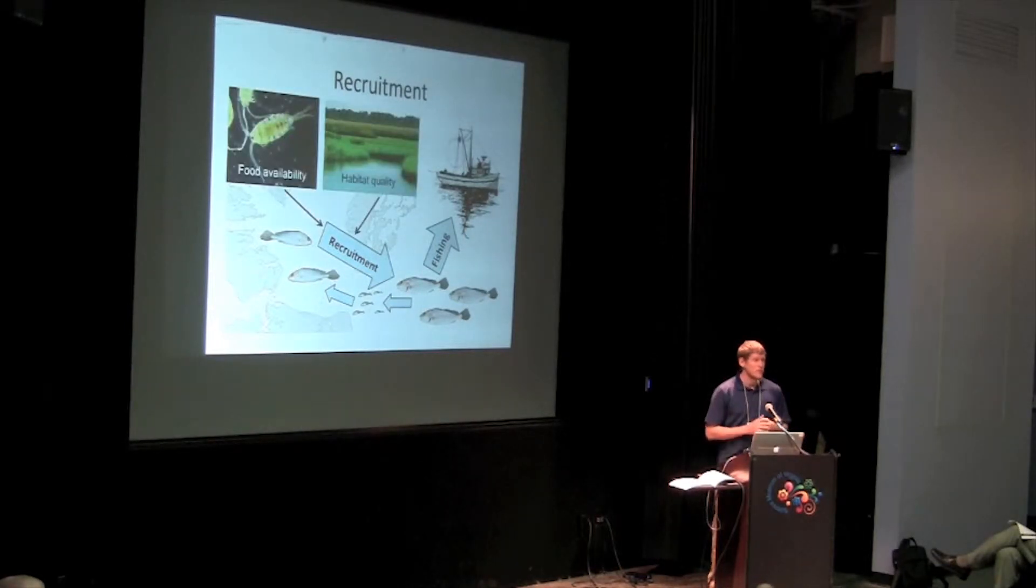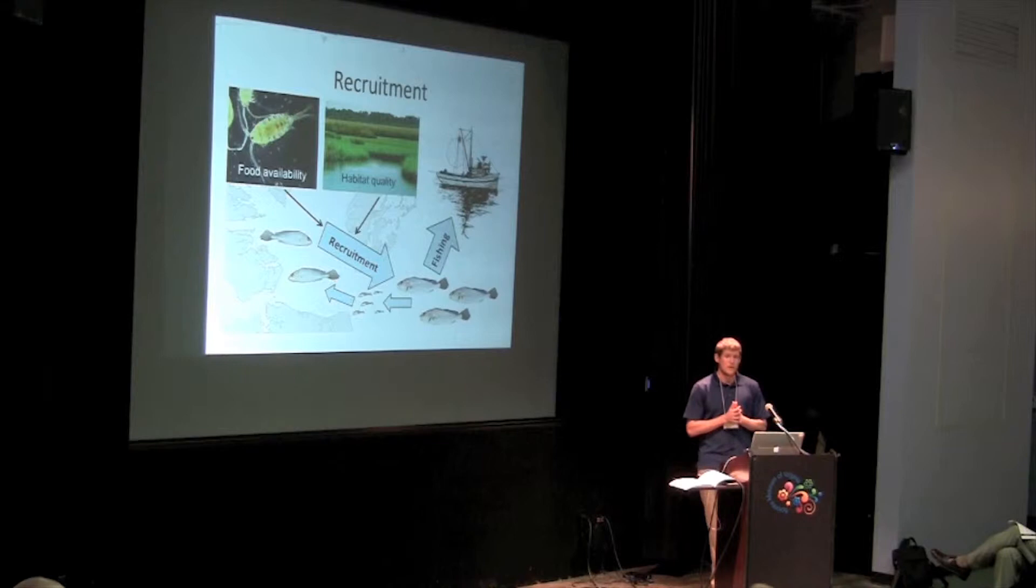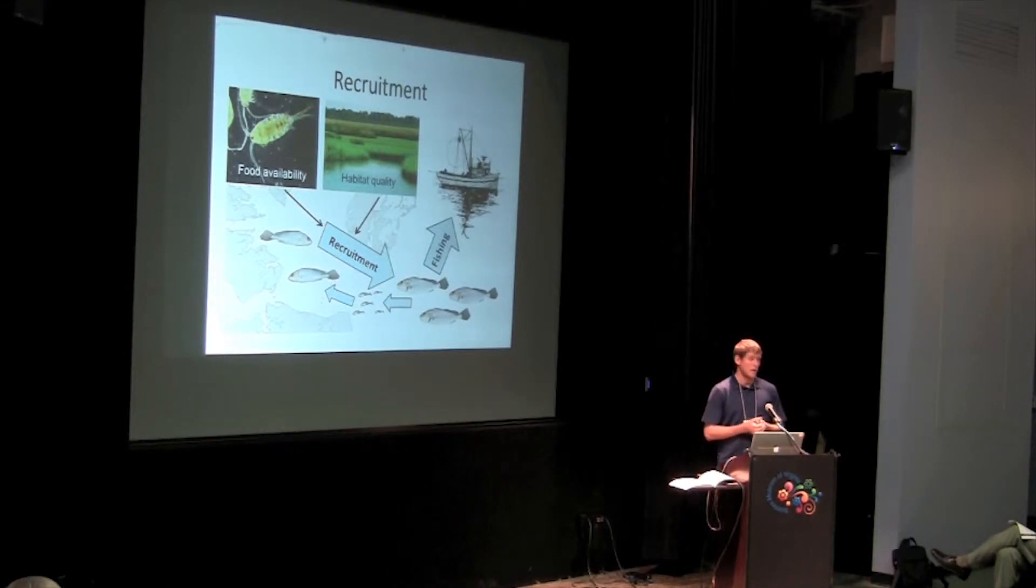Fisheries managers actually use estimates of recruitment in their stock assessments to manage for sustainability. However, recruitment can be quite variable. It changes a lot because it depends on factors such as food availability and habitat quality. Currently, our estimates of recruitment are based solely on the number or abundance of those juvenile fishes. This implies that all the fish are equally likely to survive to adulthood, and that may not necessarily be true.